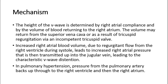Increased right atrial blood volume, due to regurgitant flow from the right ventricle during systole, leads to increased right atrial pressure that is then transmitted up into the jugular vein, leading to the characteristic V-wave distension. In pulmonary hypertension, pressure from the pulmonary artery backs up through to the right ventricle and then the right atrium.